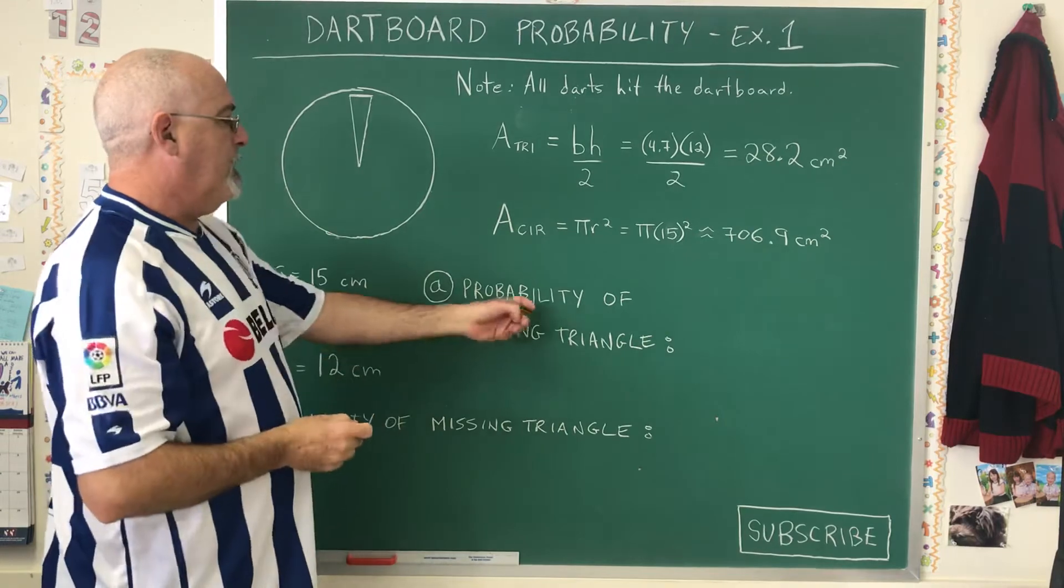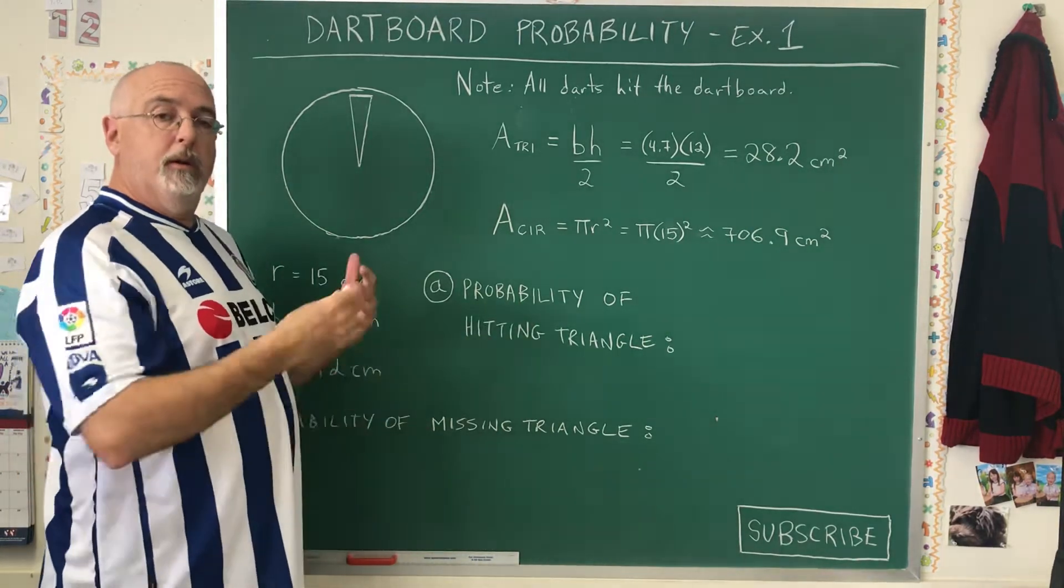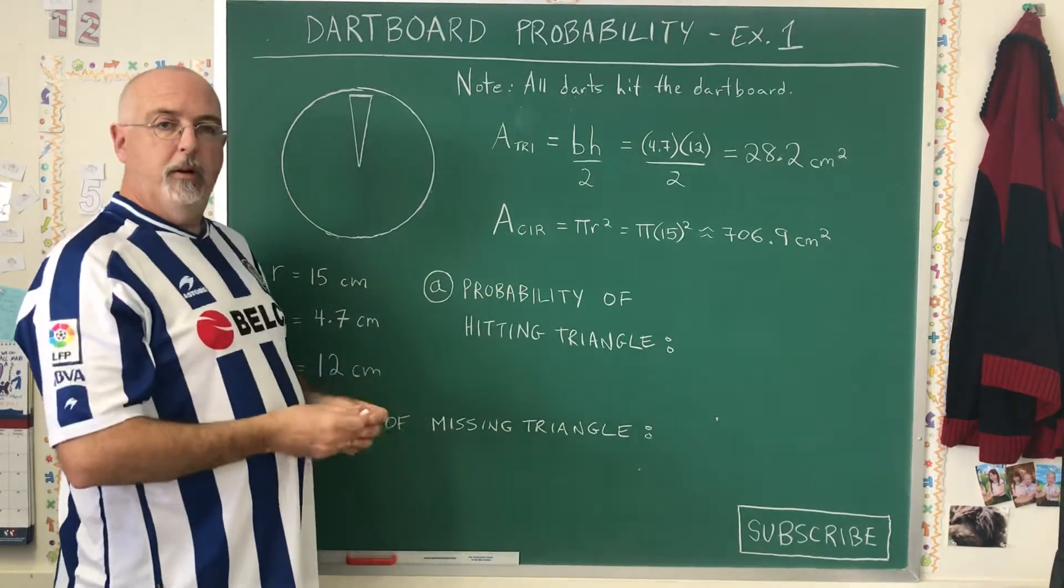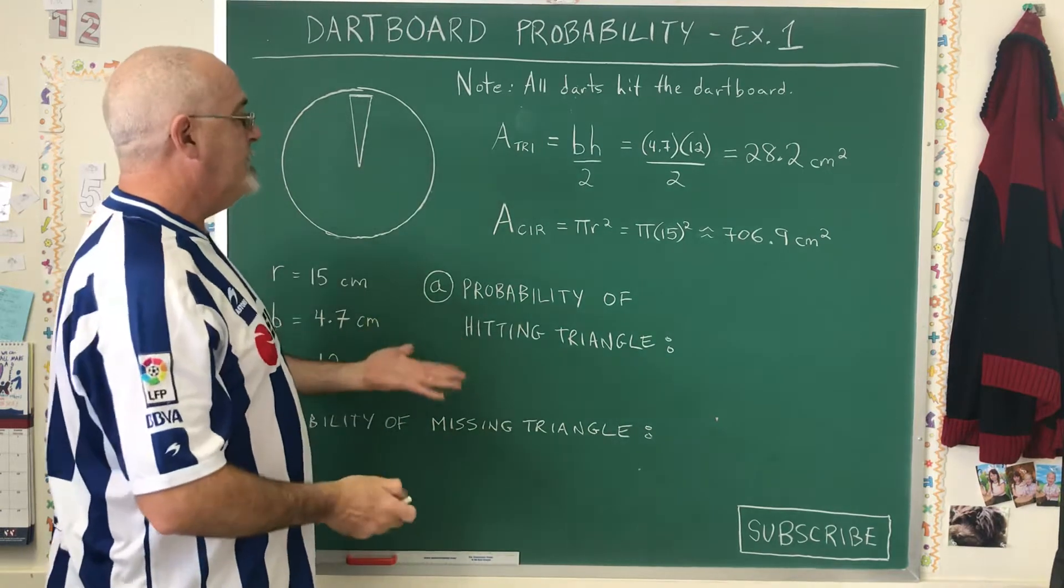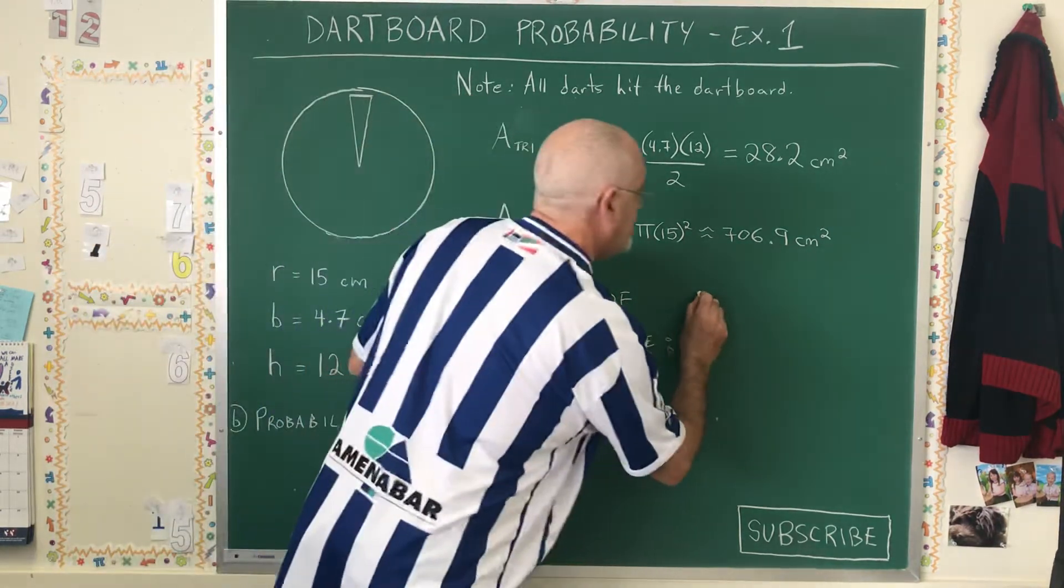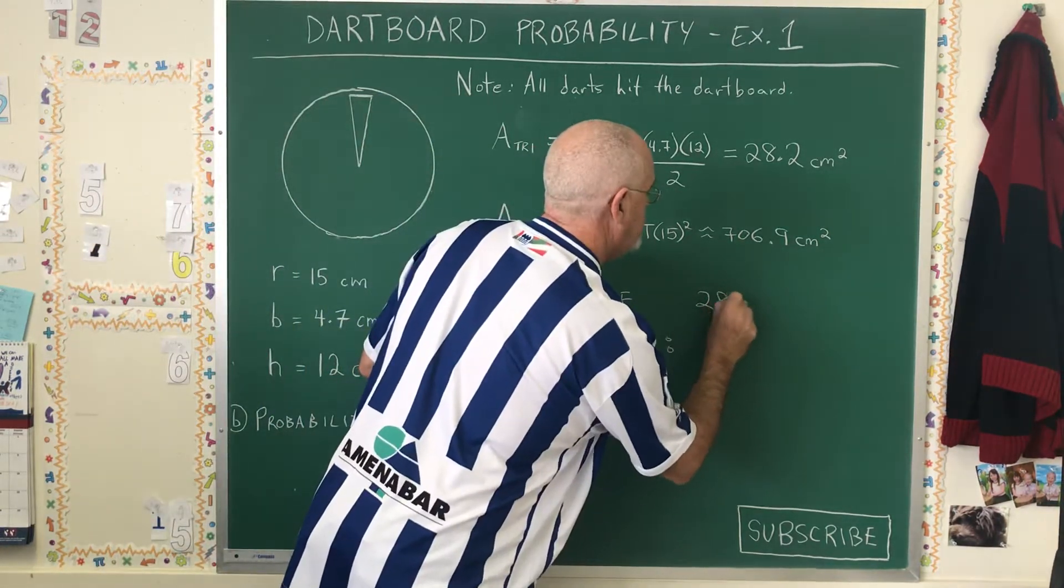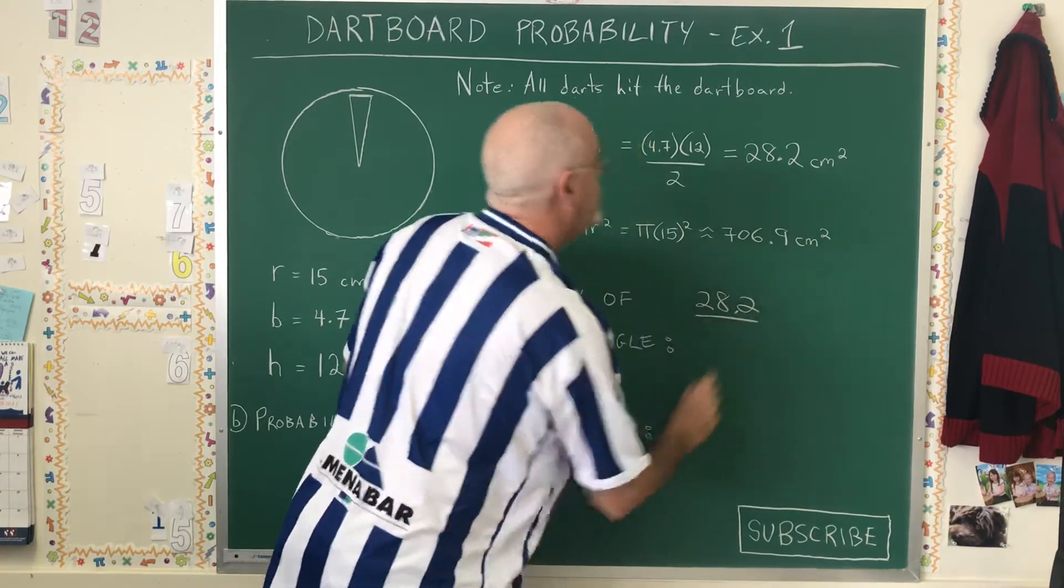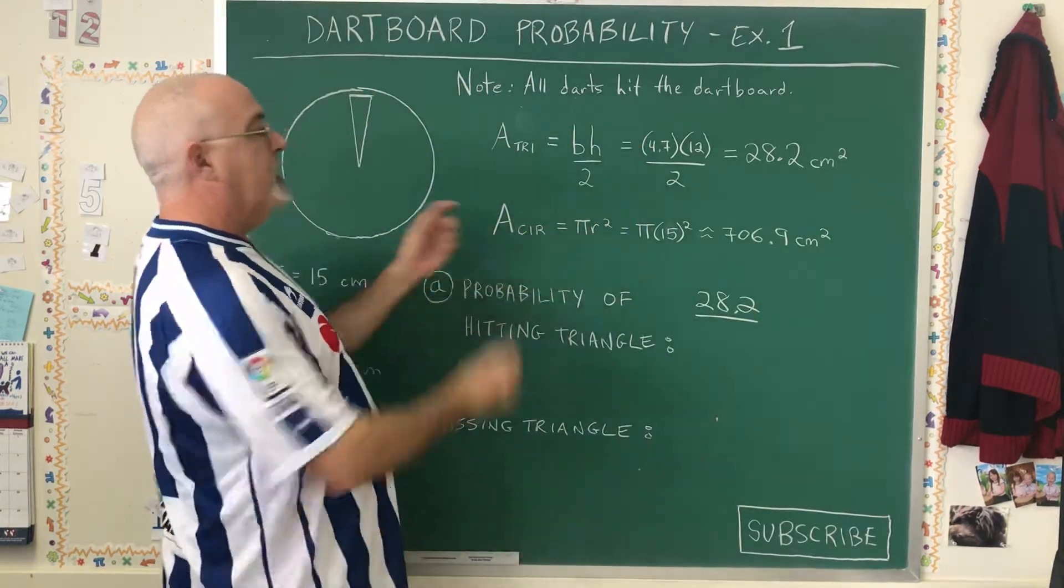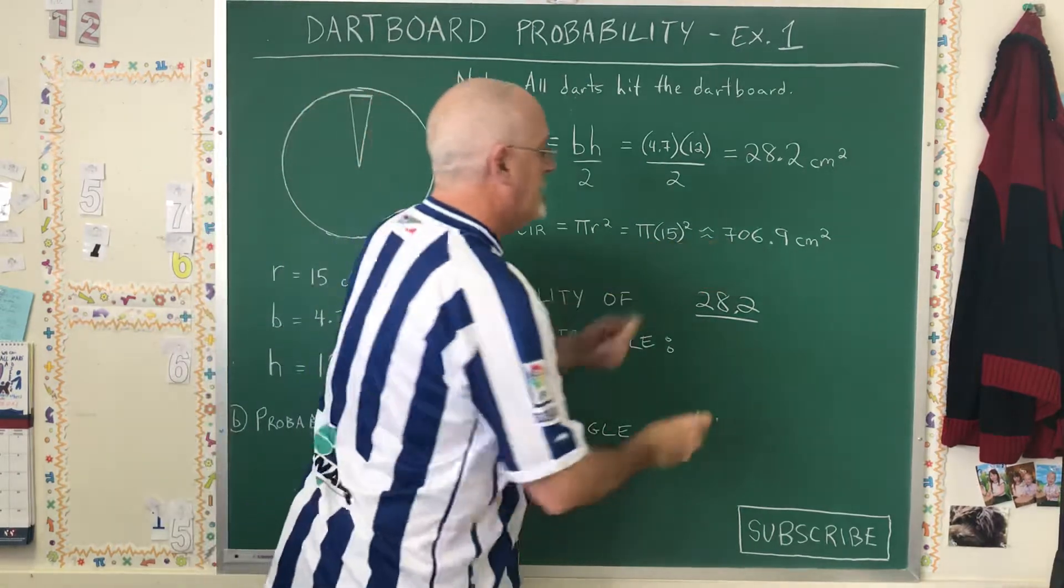In order to calculate the probability of hitting the triangle, we're using that old standby: favorable over total. The favorable is the area of the triangle, and the total is the area of the entire dartboard, which is the area of the circle.